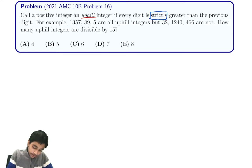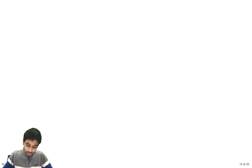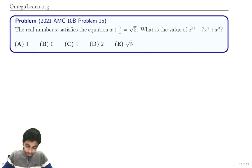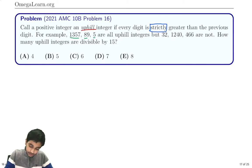For example, 1357, 89, and 5 are uphill because 1 is less than 3 is less than 5 is less than 7, 8 is less than 9, and 5 is just a single digit so of course it's strictly greater than no other digit. But we see that here these are not uphill because the digits are decreasing. And be very careful here - positive, so just a heads up there.